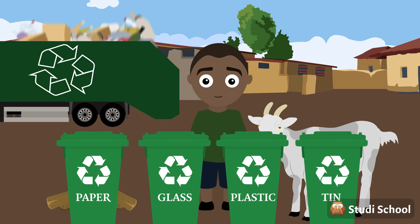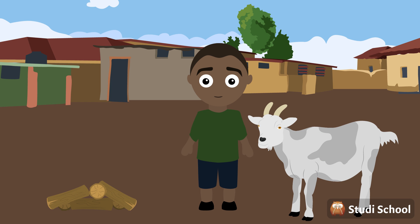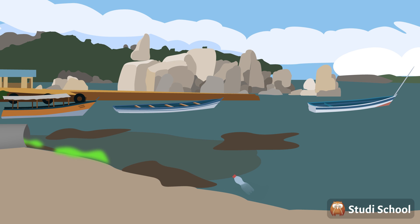Finally, there is garbage collection through local authorities or municipalities from dustbins in public places or our homes. But if waste is not disposed of correctly, it can have negative effects on the environment.